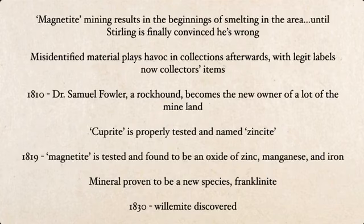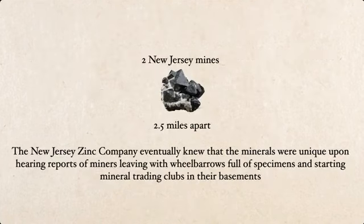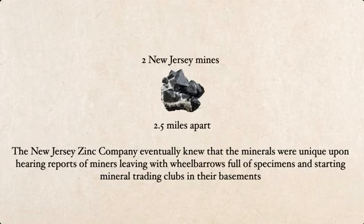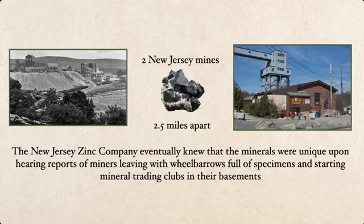So zincite, franklinite, and willamite are the three very famous mineral ores from the Franklin area. It's actually kind of ironic — given how fluorescent and famous Franklin and Sterling Hill are for fluorescent minerals — that the namesake mineral franklinite actually does not fluoresce. We have two New Jersey mines two and a half miles apart. The New Jersey Zinc Company, in charge of a lot of this land, caught on pretty quickly that they had something unique, as the miners themselves would have mineral swaps, taking home wheelbarrows full of material and trading in each other's basements.